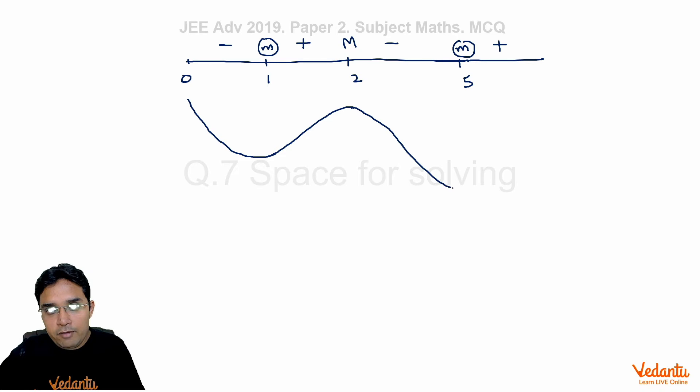So after zero it will be going down as a decreasing function. At 1 it will be having point of minima, then it will be increasing going up to 2. And then after having maxima at 2 it will be going down. At 5 it will be having point of minima and then going up. Now we have to find whether between 0 to 5...